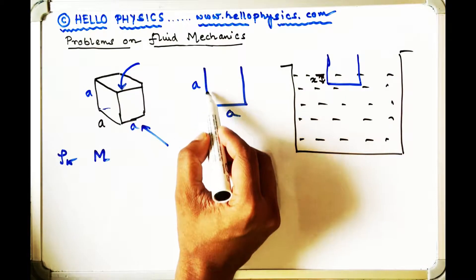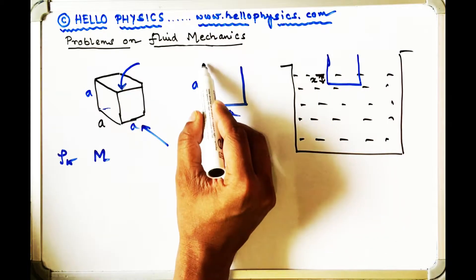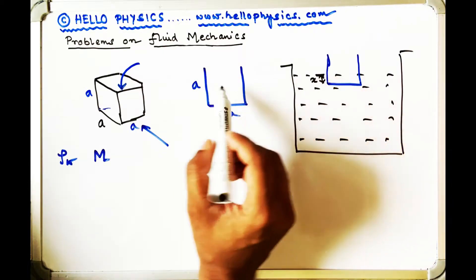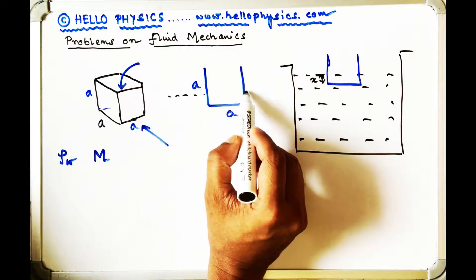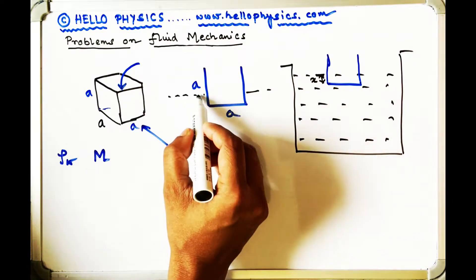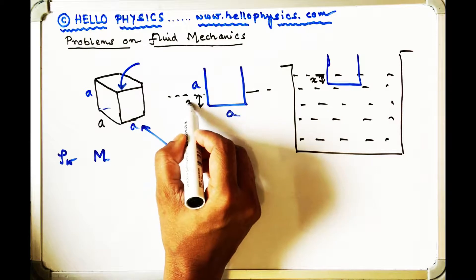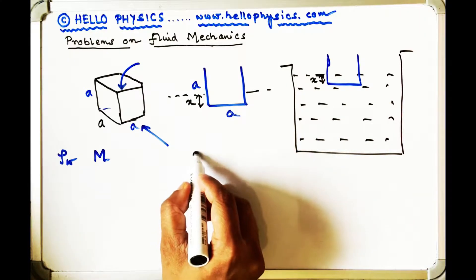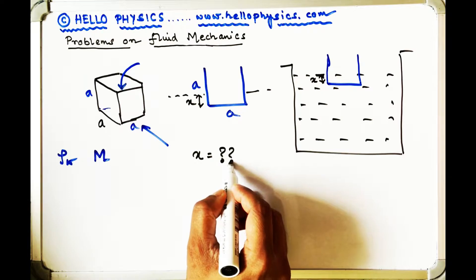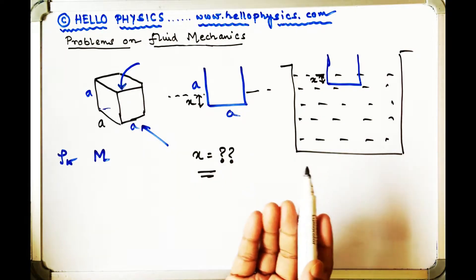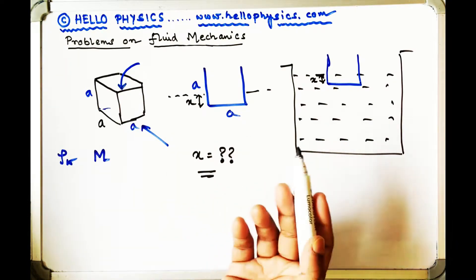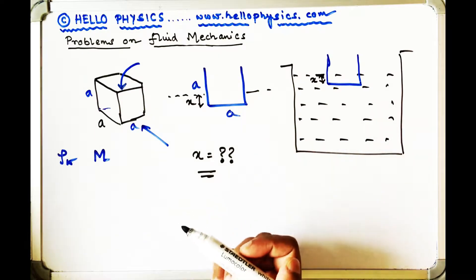The entire length of the container is equal to a, and some portion of height X gets into the liquid. You have to find what X is. This is actually a very simple problem and you should be able to solve it in just one or two lines.